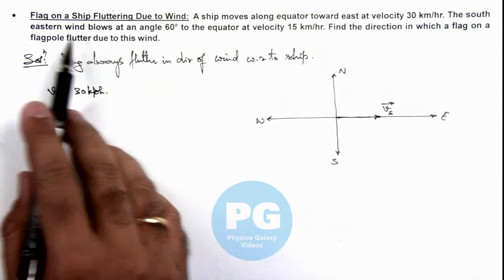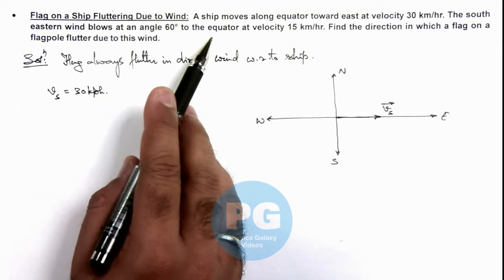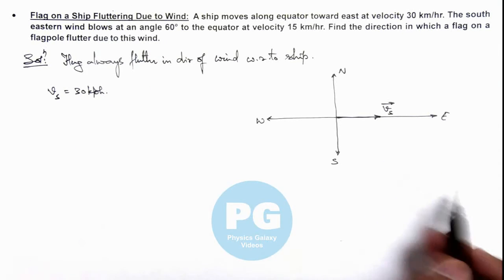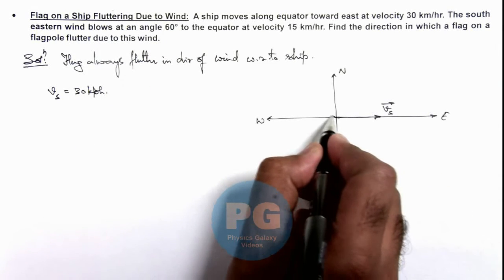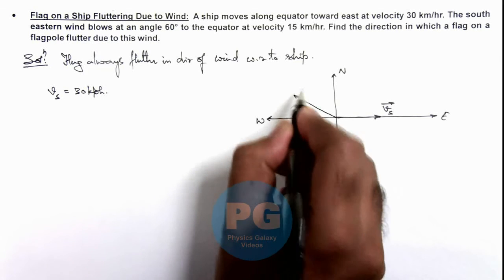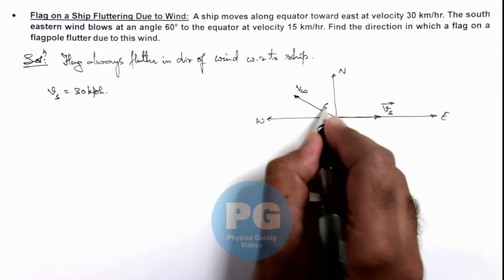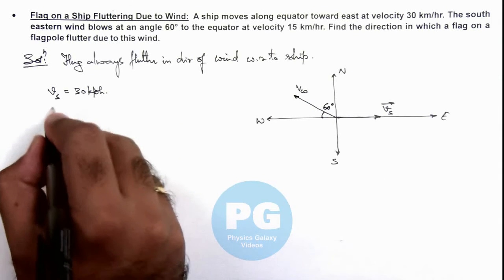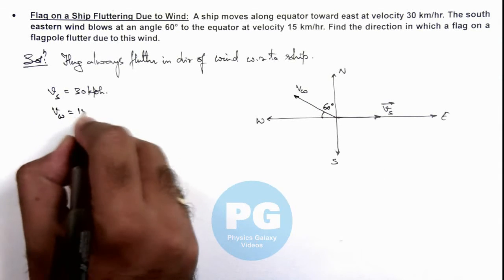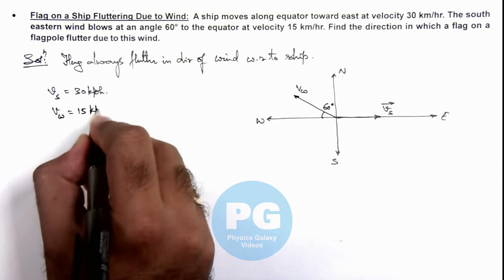A south-eastern wind blows at an angle 60 degrees to the equator, so wind is coming from southeast. This is the direction of wind velocity, which is at an angle 60 degrees to the equator, and the velocity of wind is given as 15 kilometers per hour.